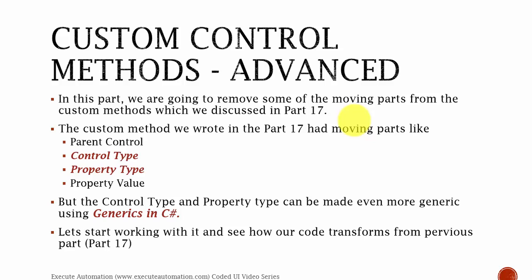In this part we are going to remove some of the movable parts which we discussed in part 17 — things like parent controls, control types, property types, and property values. The control types and property types can be made even more generic using generics in C#. If you're not familiar with generics in C#, I would request you to watch some tutorials or search for 'generics in C#' on Google before watching this video, because this video is going to fully deal with generics in C#.